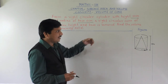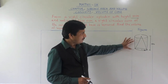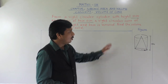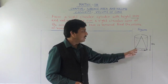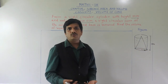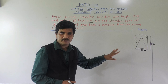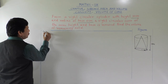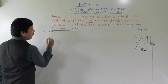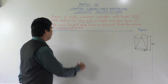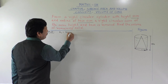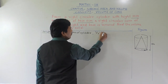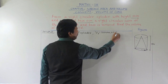First we will see what we are going to do. In this case we need to find out first the volume of cylinder, minus volume of cone. So automatically you will get the volume of the remaining solid. We will start our answer: we take V1 as the volume of cylinder and V2 as the volume of cone.